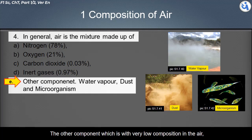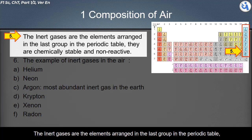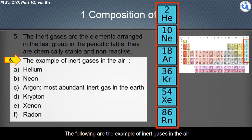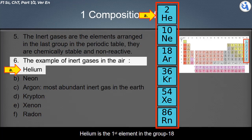Other components present in very low amounts in the air are water vapor, dust, and microorganisms. The inert gases are elements arranged in the last group in the periodic table. They are chemically stable and non-reactive. They are arranged in group 18 in the periodic table. Helium is the first element in group 18, and neon is the second element in group 18.